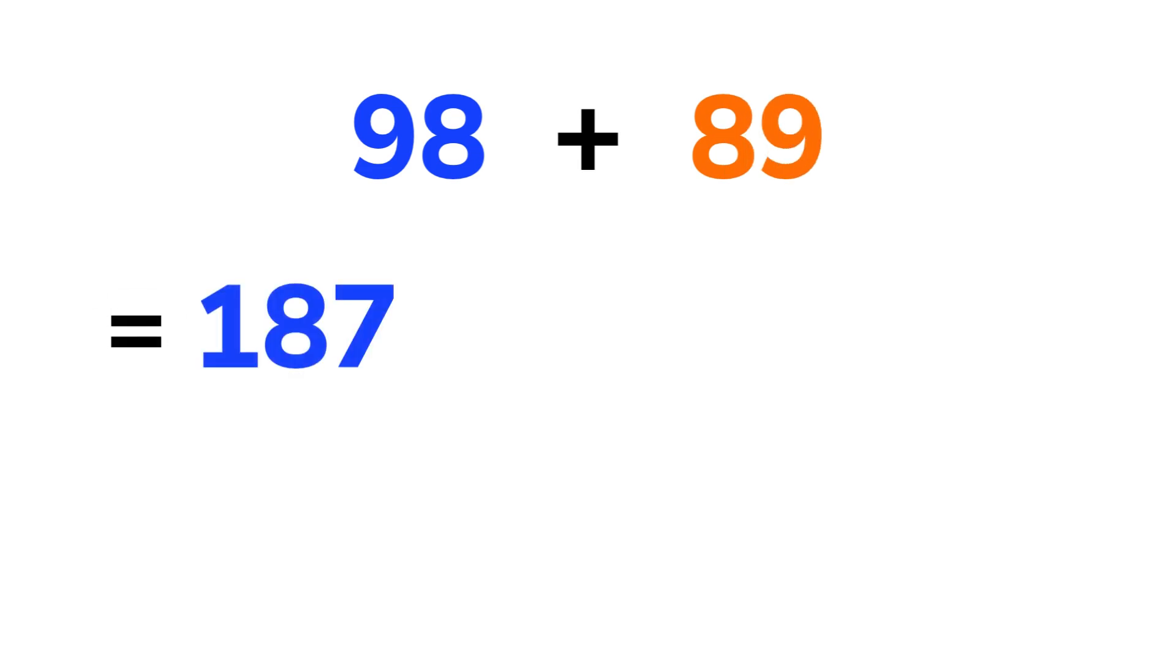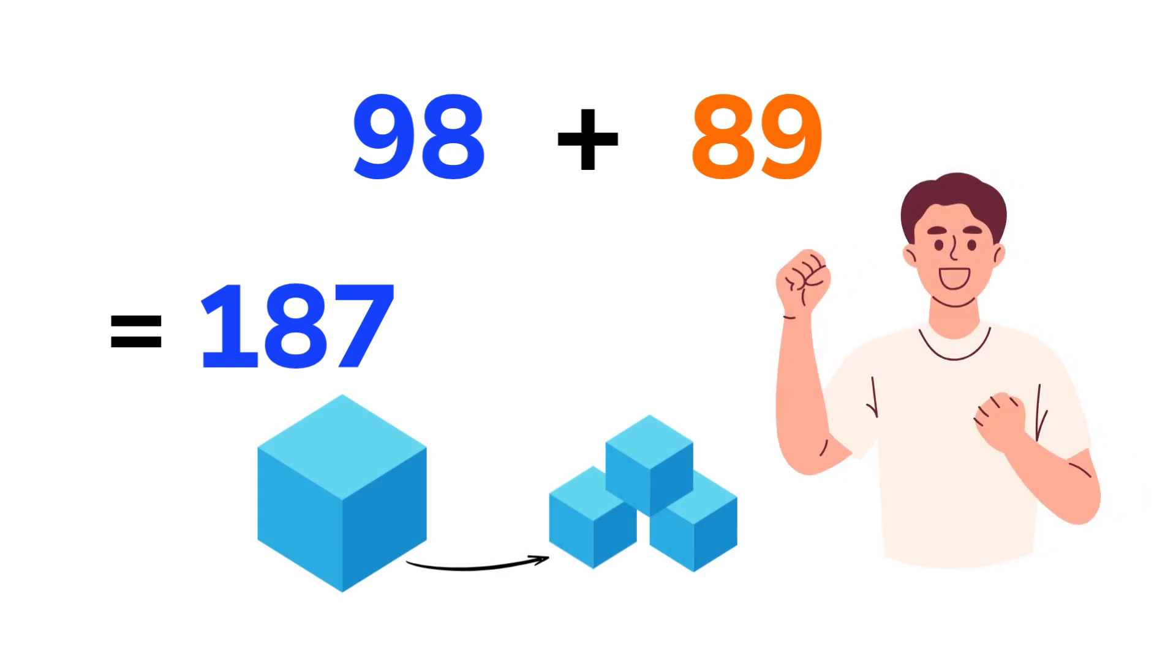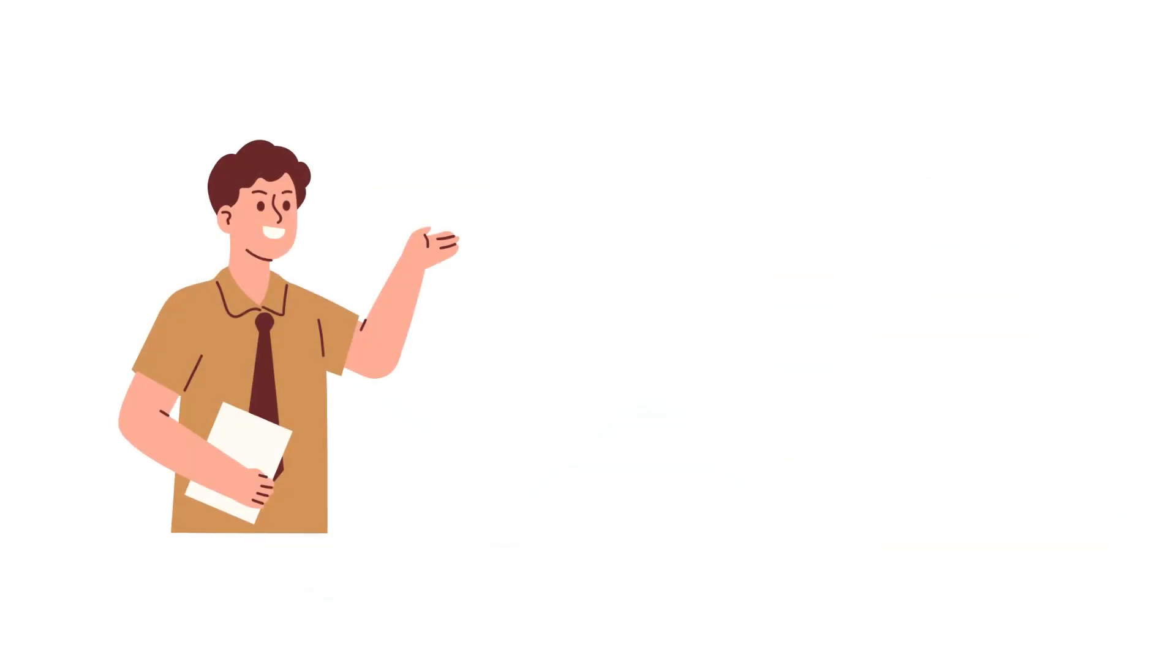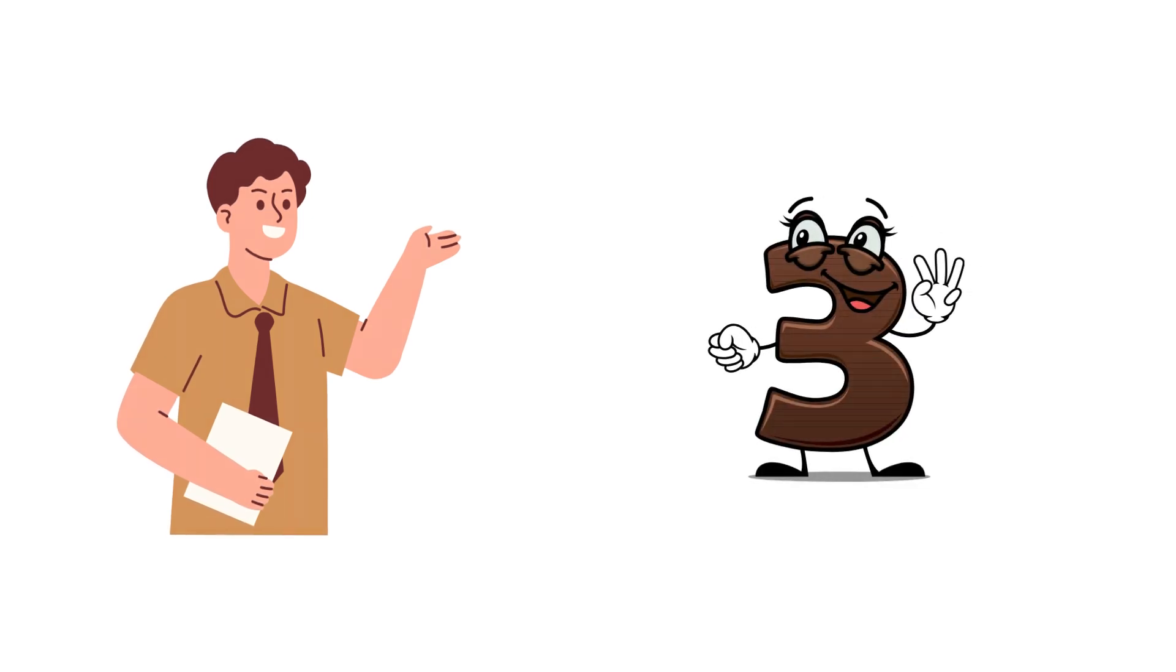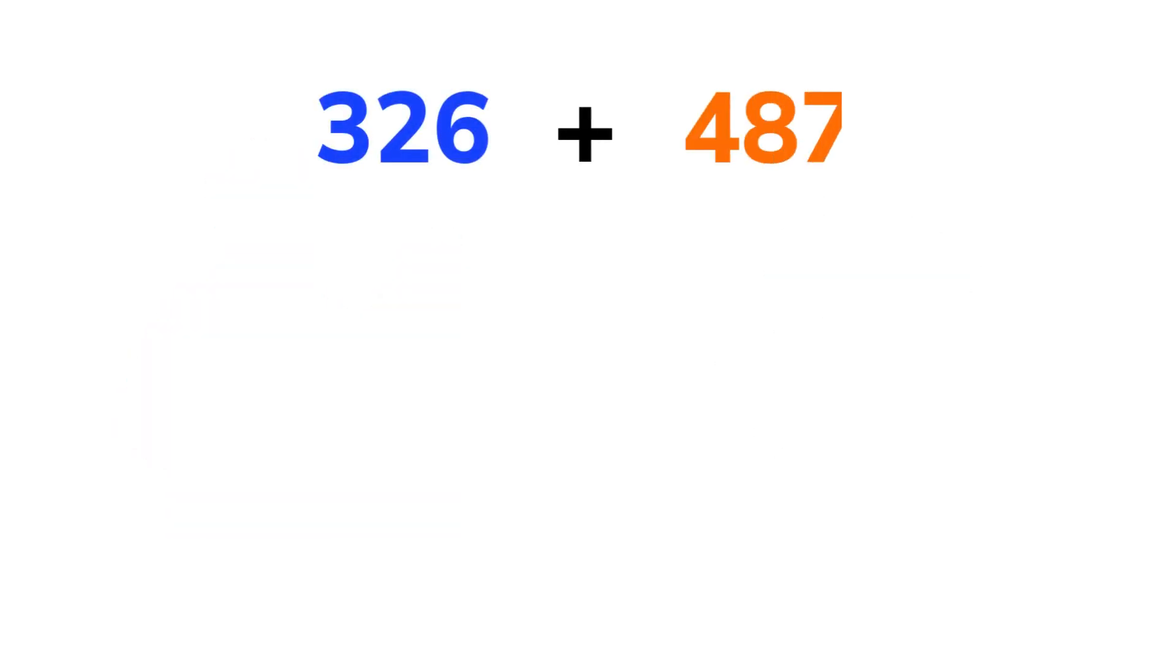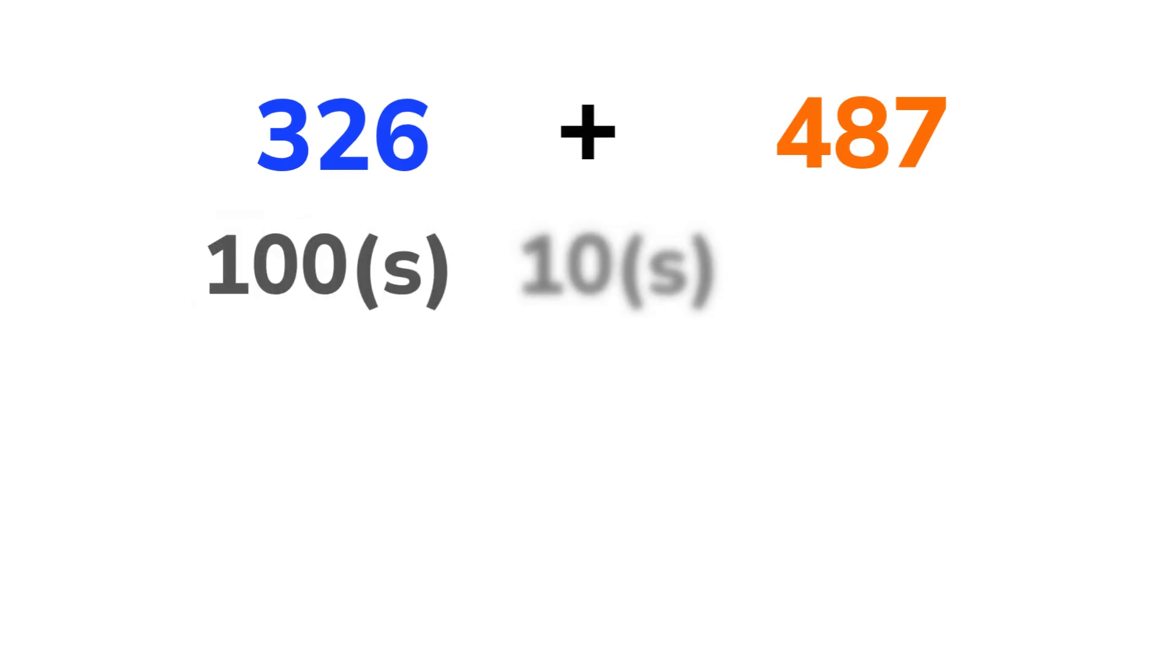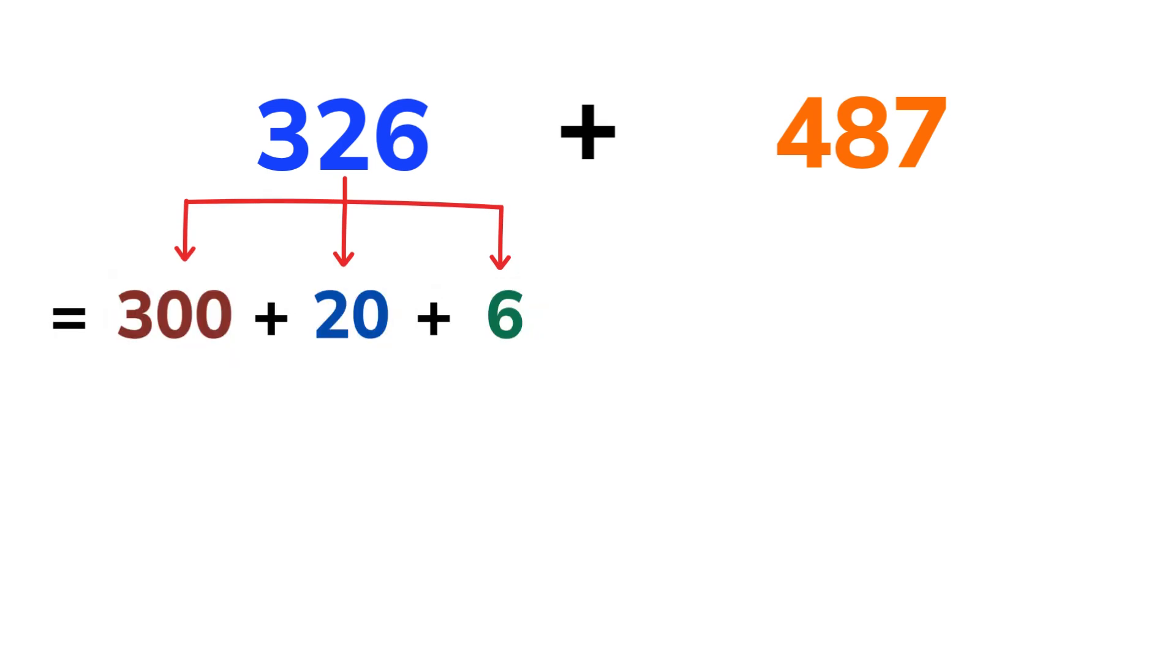Even though these numbers are close to 100, breaking them down makes the math feel much lighter. Nice. Let's level up a bit and try a three-digit example. 326 plus 487. We'll break both numbers into parts: hundreds, tens, and ones. 326 is made of 300, 20, and 6. 487 is made of 400, 80, and 7.